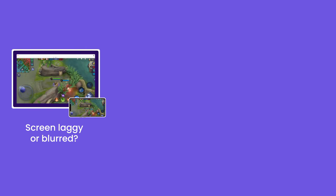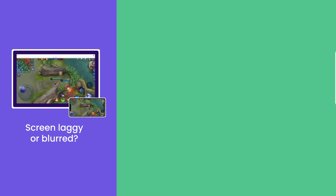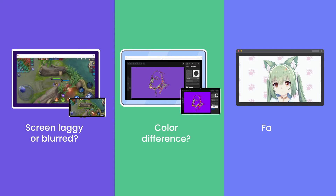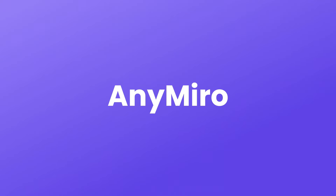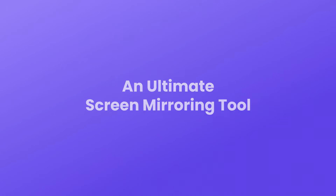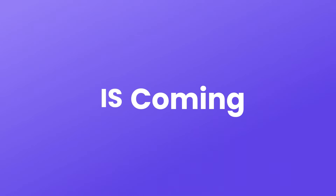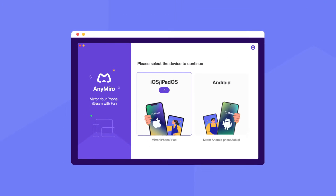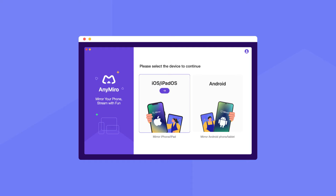As a live streamer, do you always get a lag or blur screen while streaming mobile games? Are there big color differences between your iPad and computer screen, or can you not screen mirror your animated avatar from your phone? Any Mirror, an ultimate screen mirroring solution, is now coming for all live streamers — it works for both Windows and Mac computers.